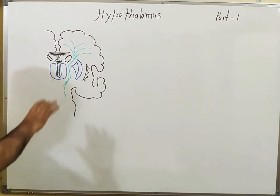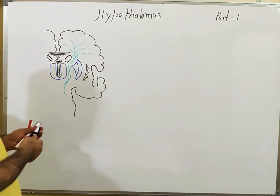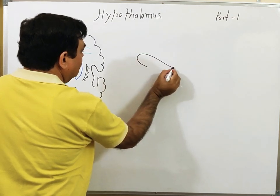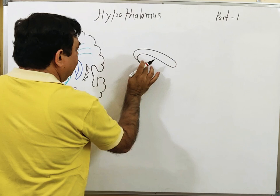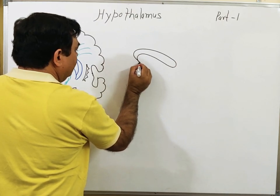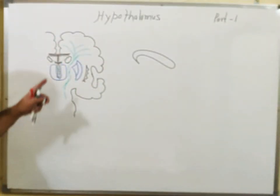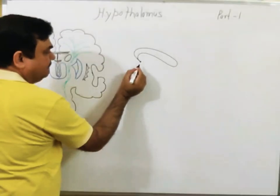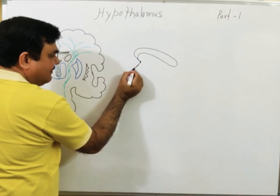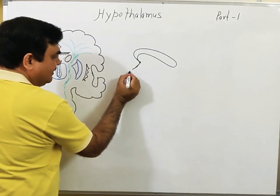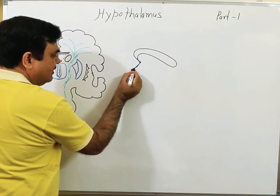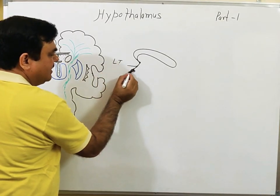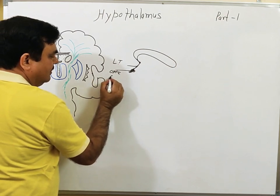If you cut a midline median section, you will find: this is the corpus callosum, here is the anterior commissure, this is the lamina terminalis — this part is the lamina terminalis — and here is the optic chiasma.